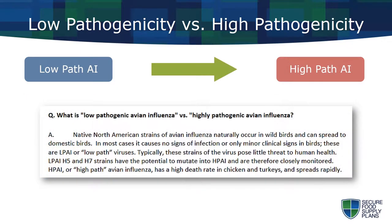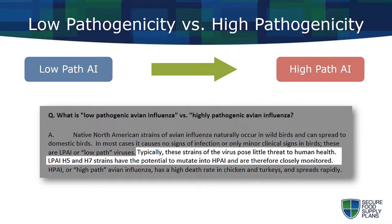Importantly, during an outbreak, a low-path AI virus will sometimes mutate into a high-path form. This is why regulatory officials may call for outbreak containment measures, such as depopulation, even when the outbreak consists of a relatively mild, low-virulence, low-path strain.